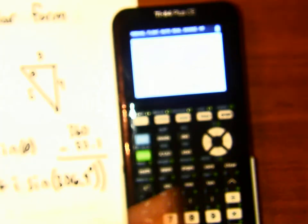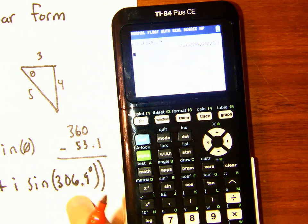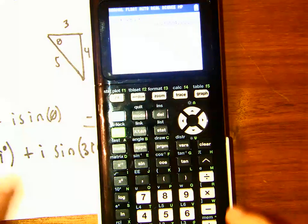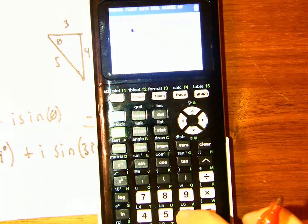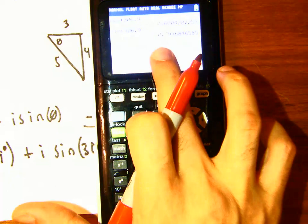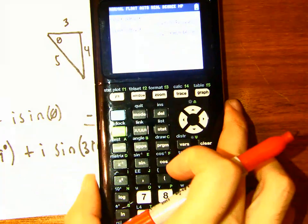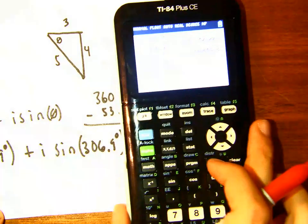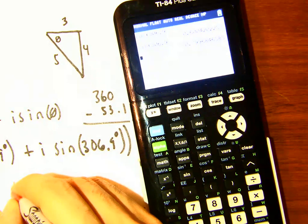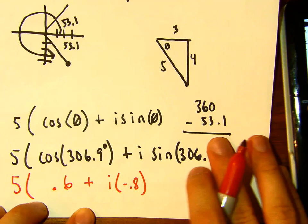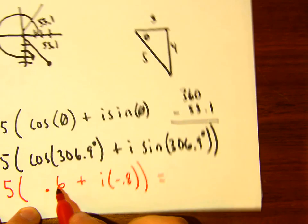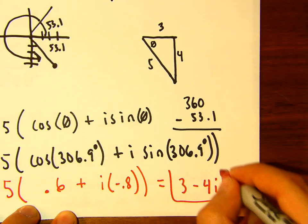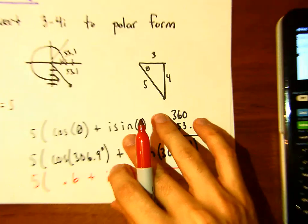Sine of 306.9 degrees should be negative 0.8 since we want a negative four. And indeed, sine of 306.9 degrees is approximately negative 0.8. So five times 0.6 is three, and five times negative 0.8 is negative 4i — giving us three minus four i. It checks out!